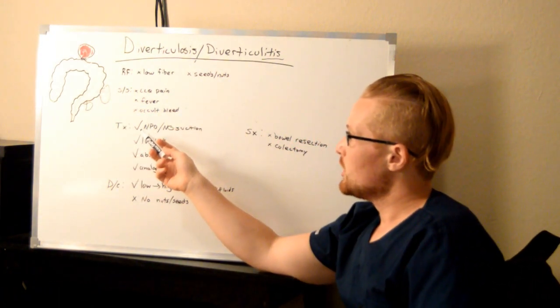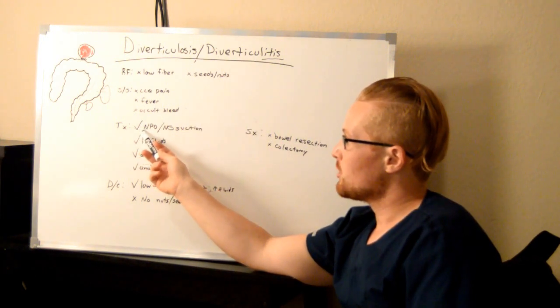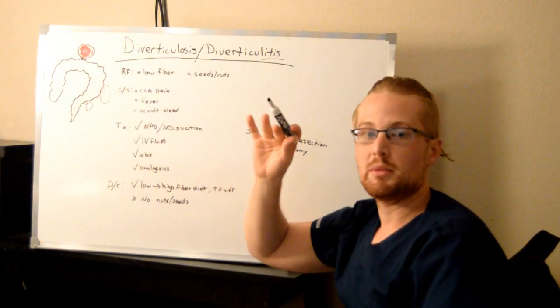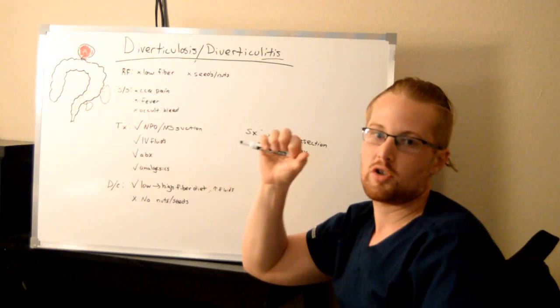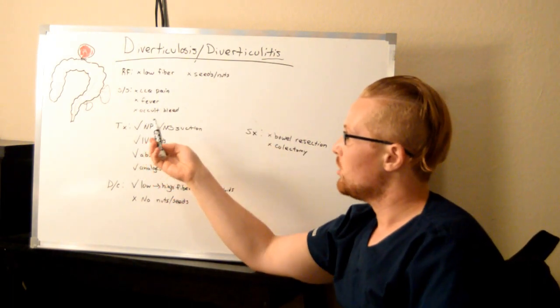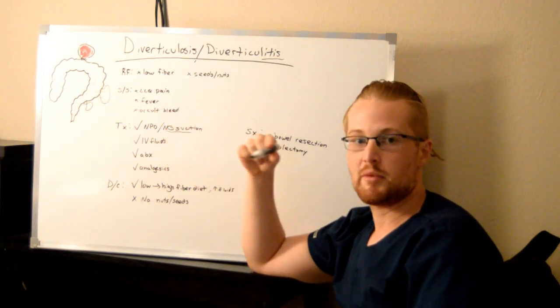Treatment for diverticulitis—at this point the patient's going to be NPO, and the reason being is you don't want a bunch of stuff moving through the large intestine that's going to be causing increased pressures and putting more pressure on that inflamed bowel. You may also see NG tubes inserted and they'll be on suction to get everything out of the stomach.